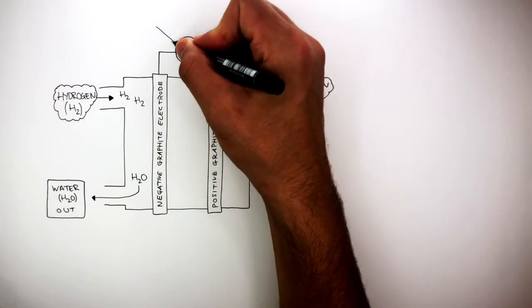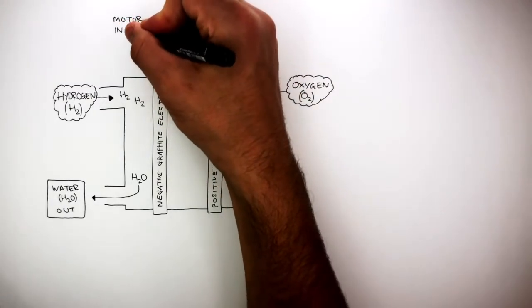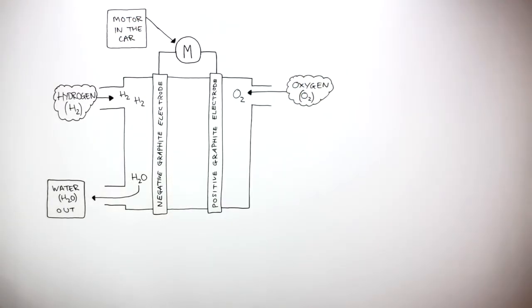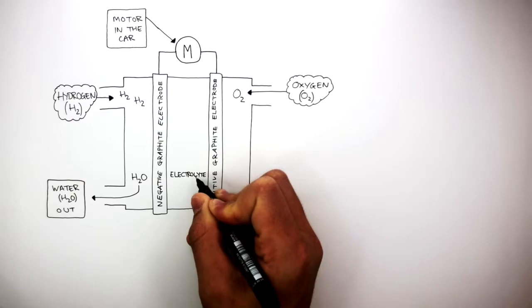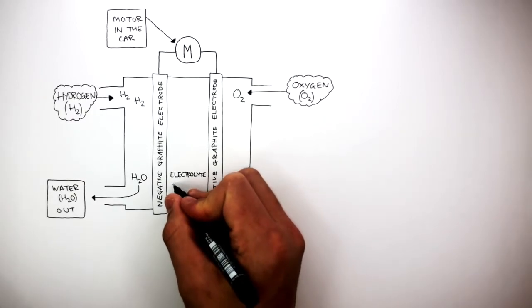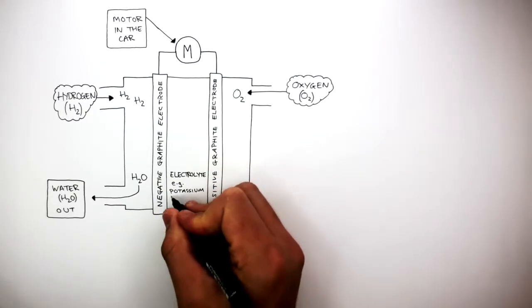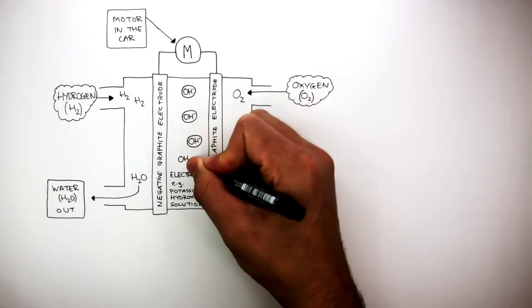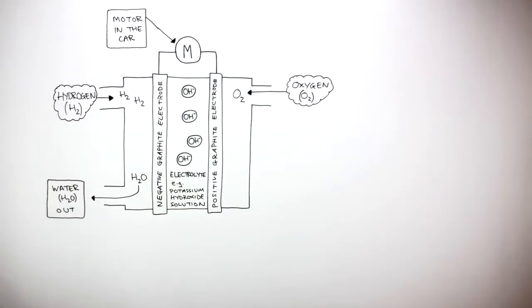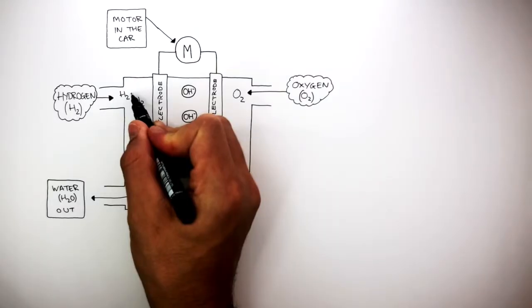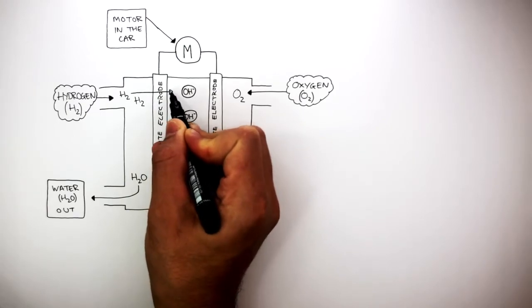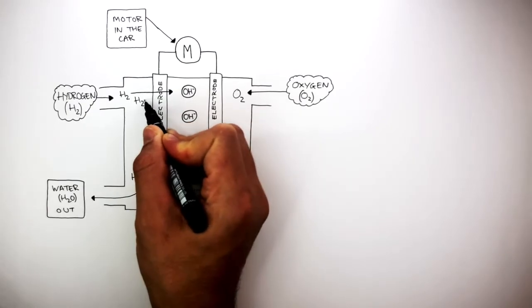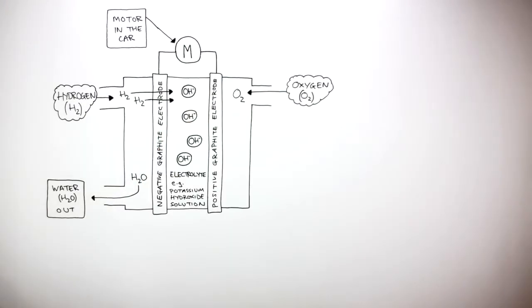This symbol represents the motor in the car. The electrolyte in the fuel cell, located in between the two electrodes, is normally a potassium hydroxide solution containing hydroxide ions which are free to move — OH⁻. What happens is the hydrogen gas diffuses through the graphite electrode and reacts with the hydroxide ions, forming water.